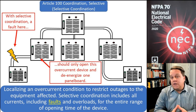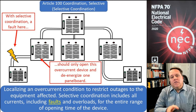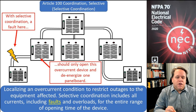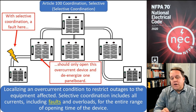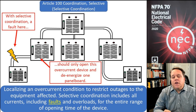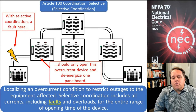Selective coordination, or 'coordination, selective,' is defined as localizing an overcurrent condition to restrict outages only to the equipment affected. Selective coordination includes all currents — including faults and overloads — for the entire range of opening time of the device.